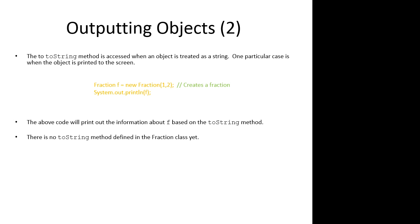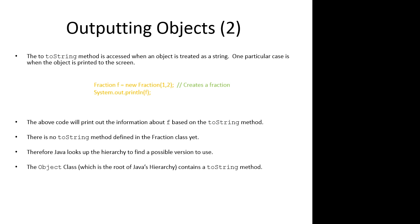There's no toString method defined in the fraction class yet. Therefore, Java looks up the hierarchy to find a possible version to use. The object class, which is the root of Java's hierarchy, contains a toString method. All classes are objects. The toString in the object class returns the object type and memory reference as a string.